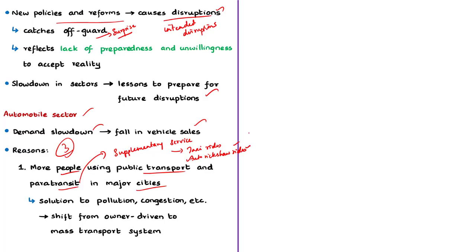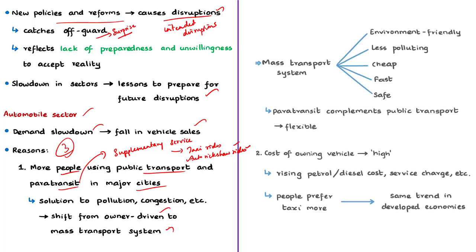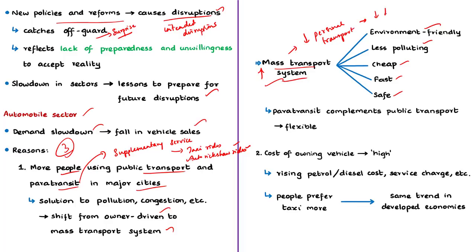The author notes that for many decades there have been discussions about pollution, congestion, and accidents caused by rapidly increasing automobiles in cities. As a solution, shifting from owner-driven transport to mass transport systems was proposed. Mass transport systems are more environment-friendly, less polluting, cheaper, faster, and safer. As a result, many cities are building mass rapid transit systems. More public transport usage means less personal transport usage, reducing vehicle purchases and hitting the automobile sector.